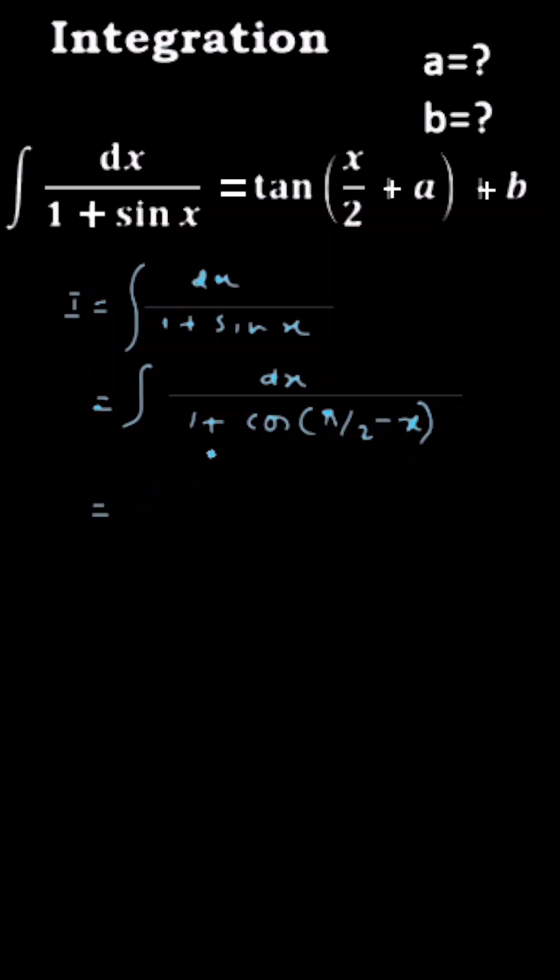Now you have to apply a formula of sum multiple angle of trigonometry which is 1 plus cos x is equal to 2 cos square x by 2, and so it will be integral of dx by 2 cos square pi by 2 minus x divided by 2.